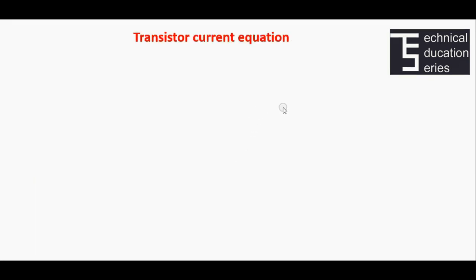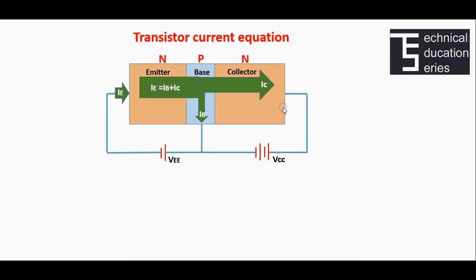Transistor current equation. The three primary currents which flow in a properly biased transistor are the emitter current IE, base current IB, and collector current IC. The emitter current IE is equal to the sum of base current IB and collector current IC. The direction of the emitter current is always opposite to that of the base current IB and collector current IC.